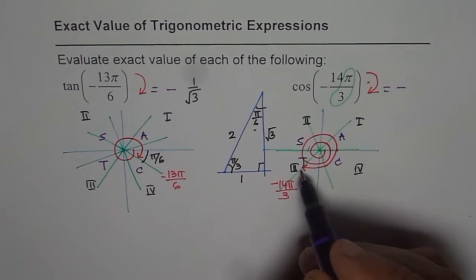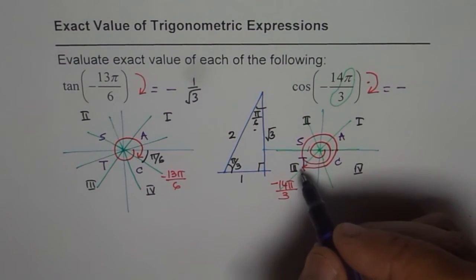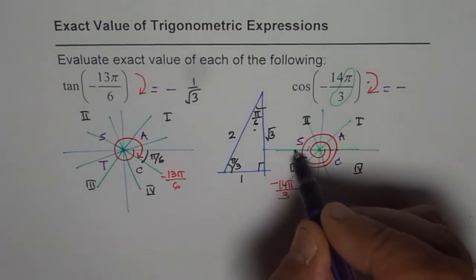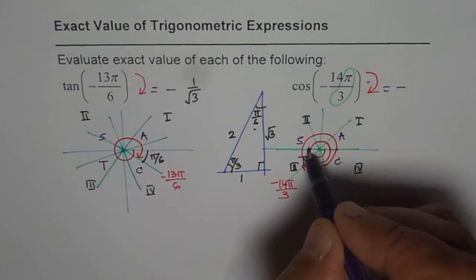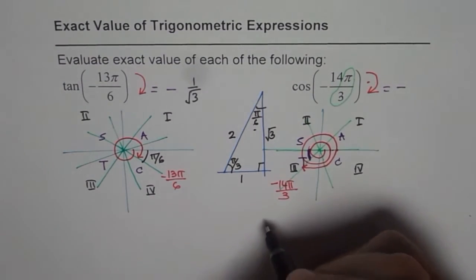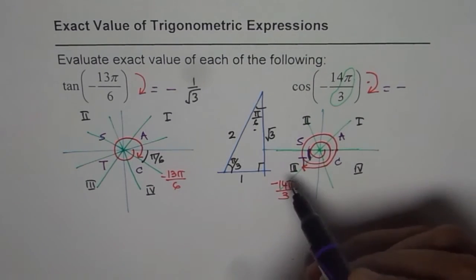Now, what is the acute angle or the reference angle? Reference angle is this angle, which is π by 3. So let us find the value of cos π by 3.